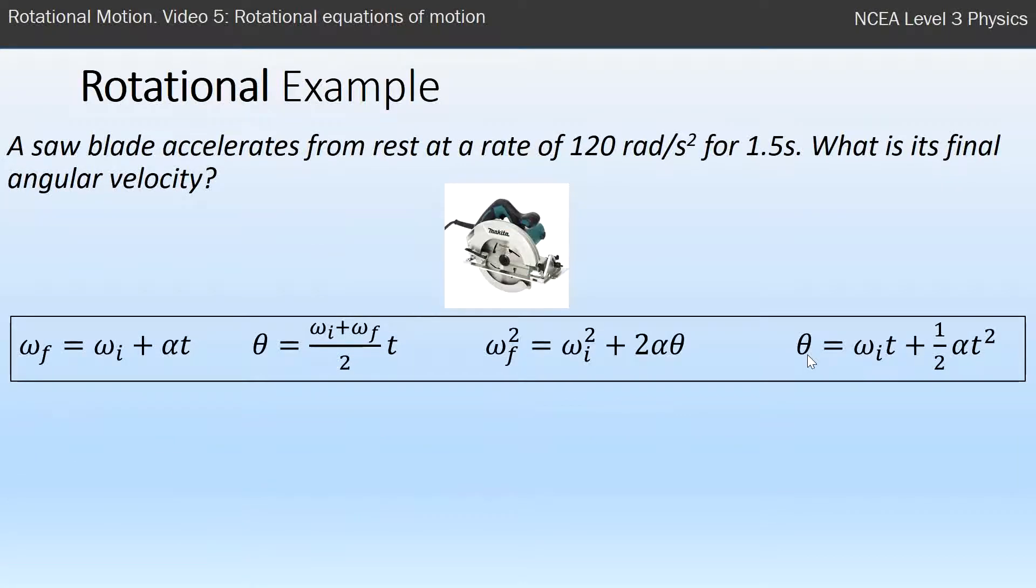The rotational example is exactly the same. The hardest step is for you to identify that your system is undergoing rotational motion and to realize you should try one of these equations of motion for a rotating system. A saw blade accelerates from rest at a rate of 120 radians per second squared for 1.5 seconds. What's its final angular velocity? It's undergoing acceleration and we want to know velocity, so we're going to use one of these four equations.